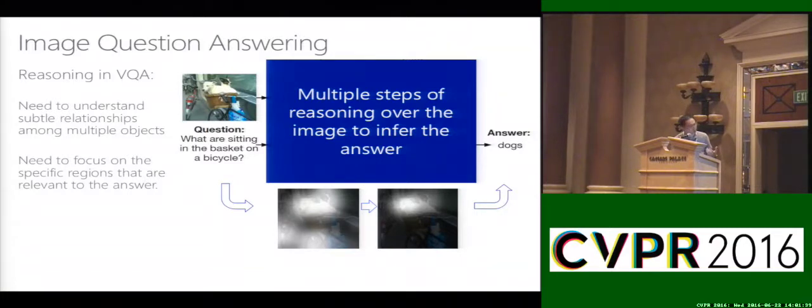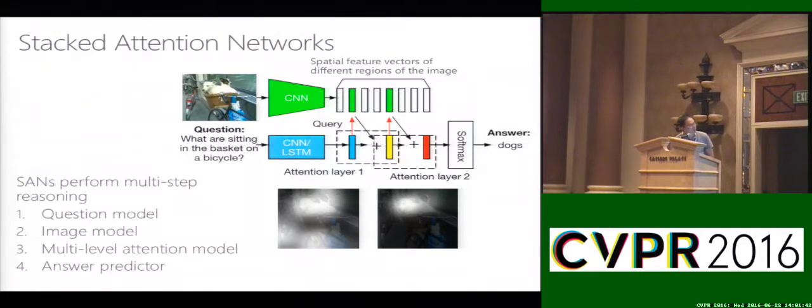In order to perform this multiple step reasoning, we propose a new model called Stacked Attention Network. This is the high-level architecture of this network. Given the image and given the question as input, we go through four steps. We first encode the question using a question model, then we encode the image using an image model. At the core of the model, we use a multi-level attention model to model the interaction between the question feature and the vision features, and then eventually we deliver the feature to our answer predictor to predict the final answer.